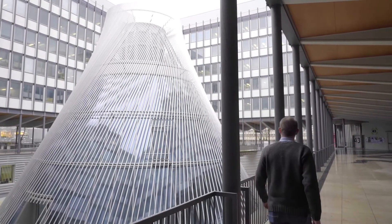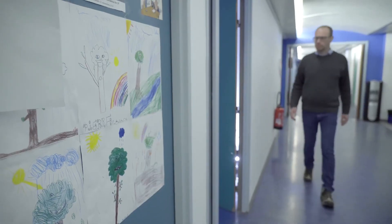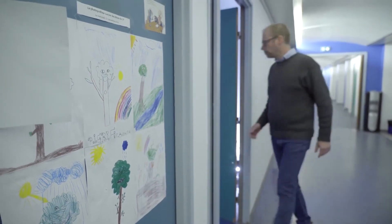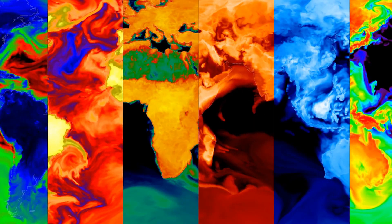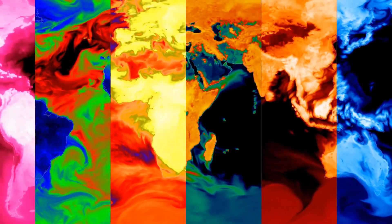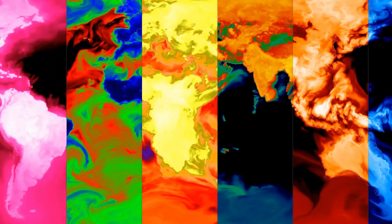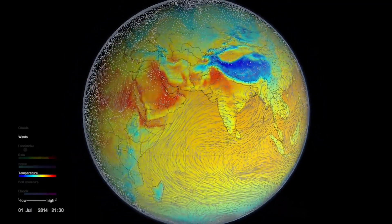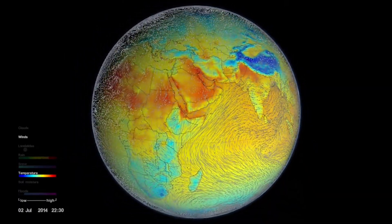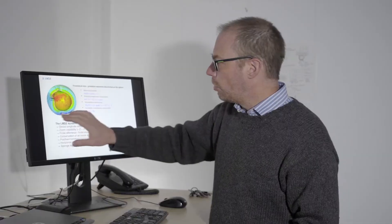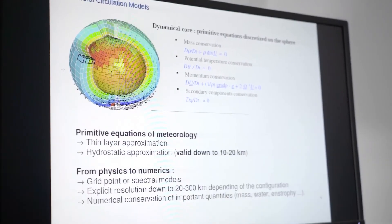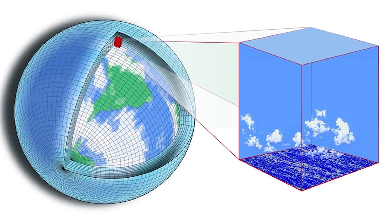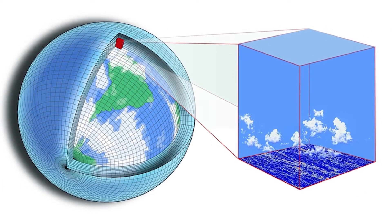Building a climate model means dealing with a whole load of data. We rely on a number of physical laws, such as the conservation of mass, conservation of energy, conservation of momentum. And we discretize them onto a grid with a number of grid points. At every grid point, we can resolve temperature, humidity, and wind.